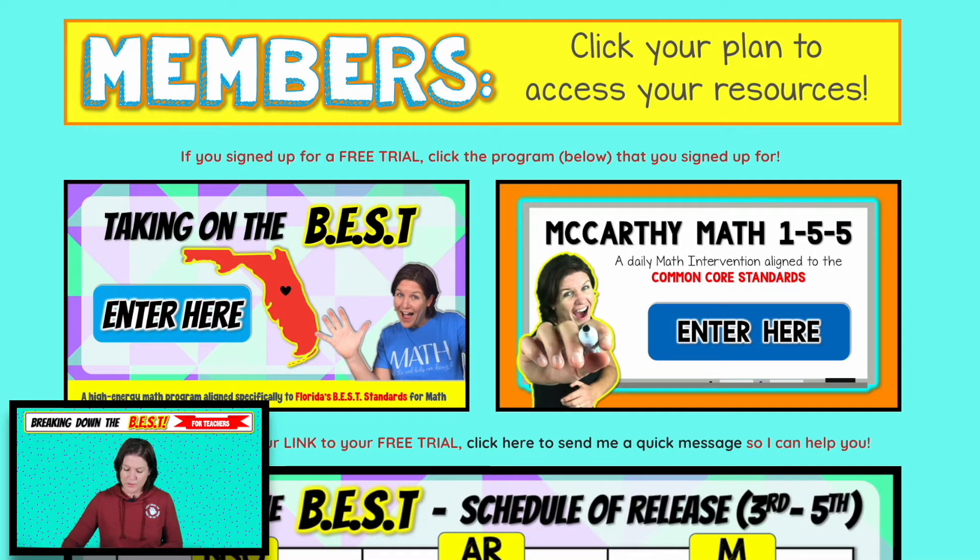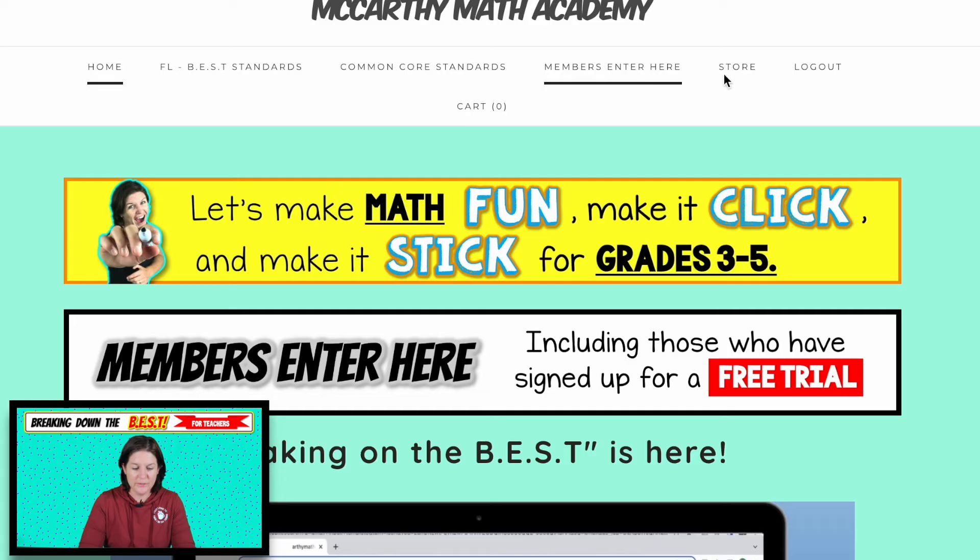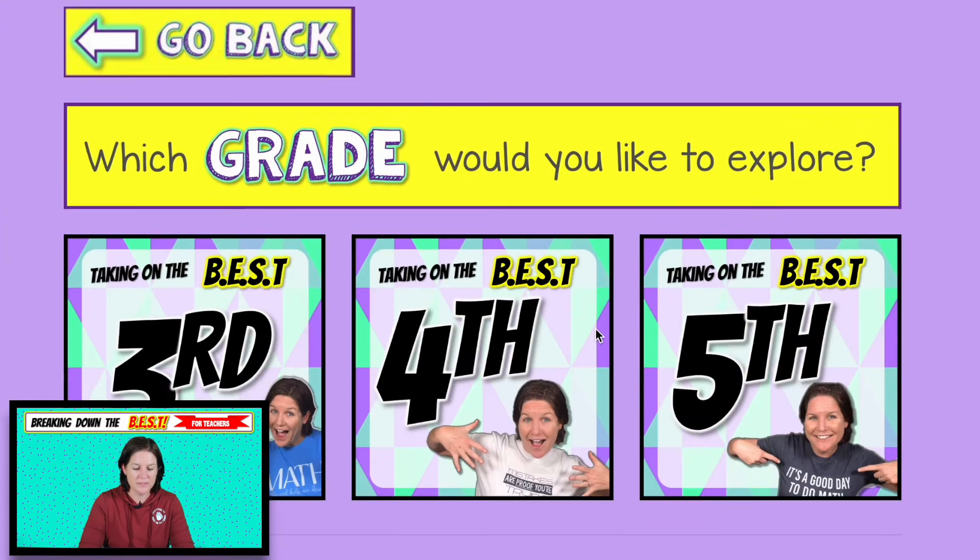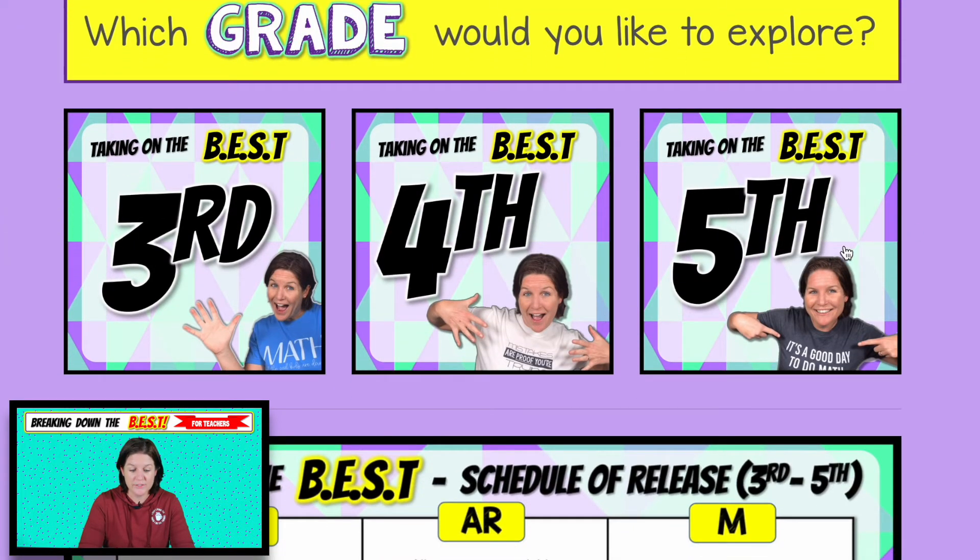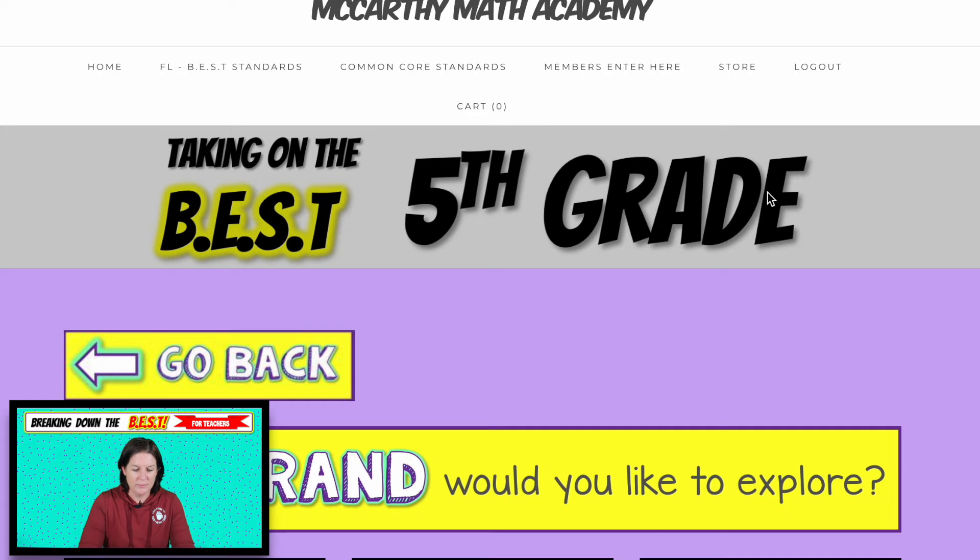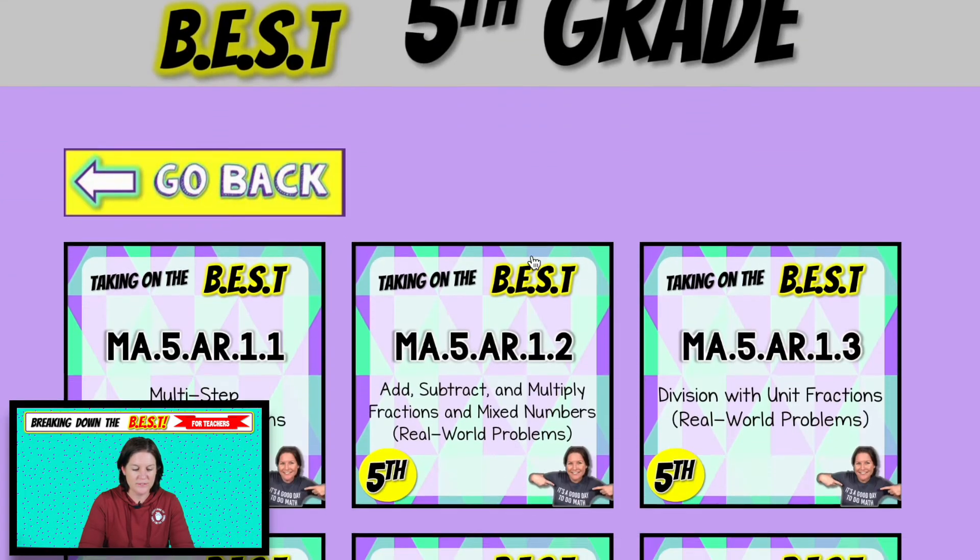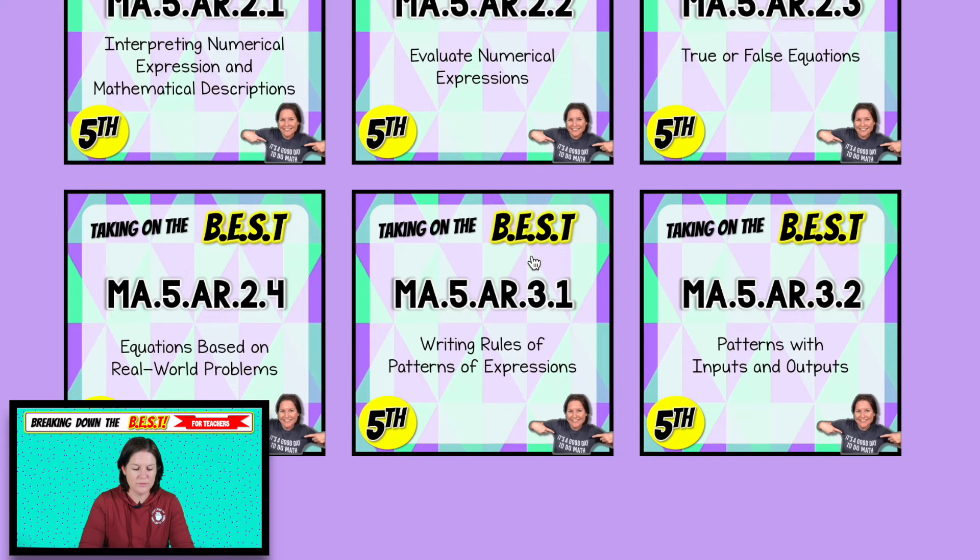Okay, so let me show you what you have access to with your membership to Taking on the Best. Here we are on the website. You're going to click the tab Members Enter Here, click Taking on the Best. You might need to log in too. I'm already logged in. I'm clicking fifth grade, the AR strand, and then scrolling down to this one right here: MA.5.AR.3.1 writing rules of patterns as expressions.